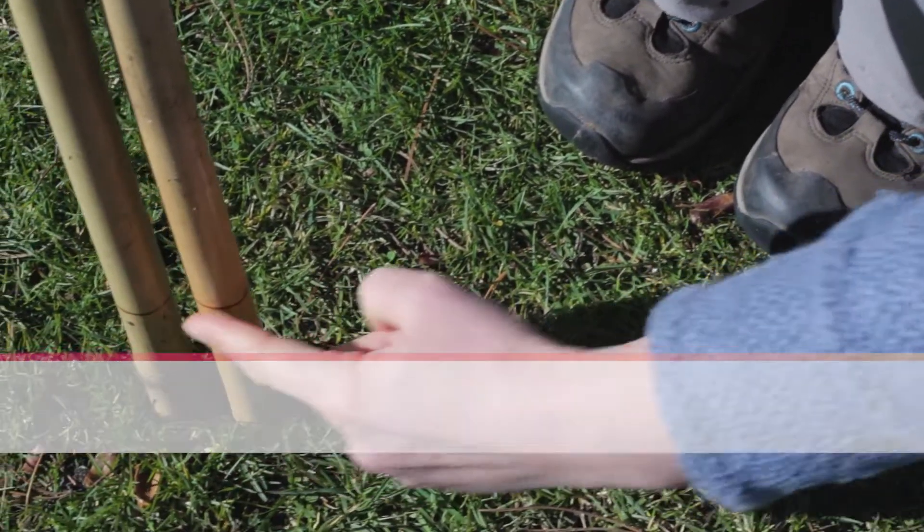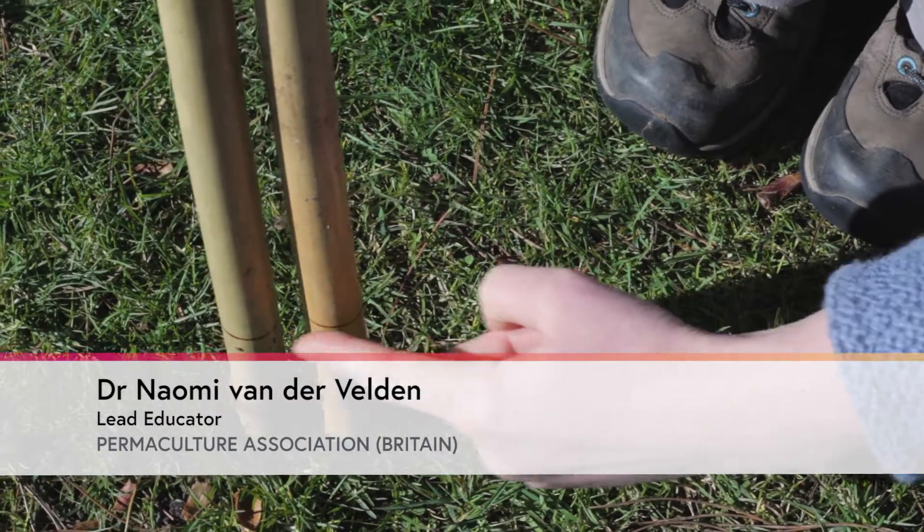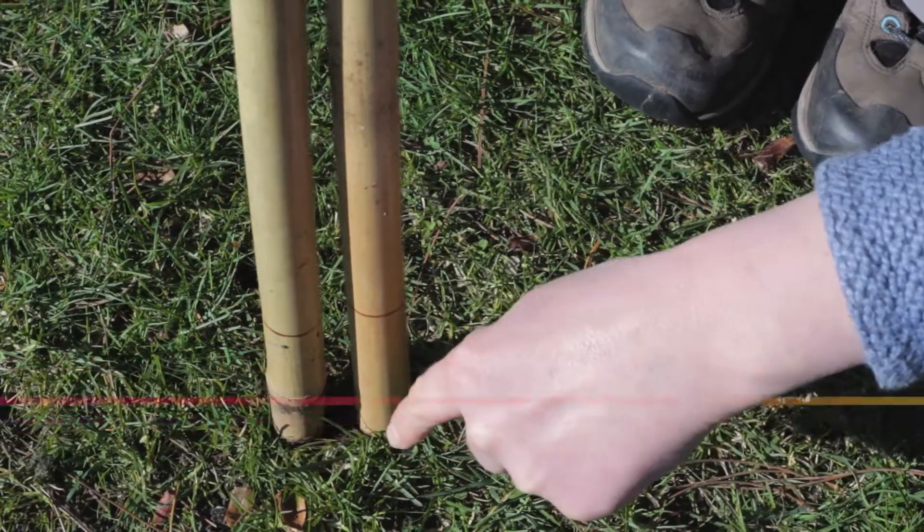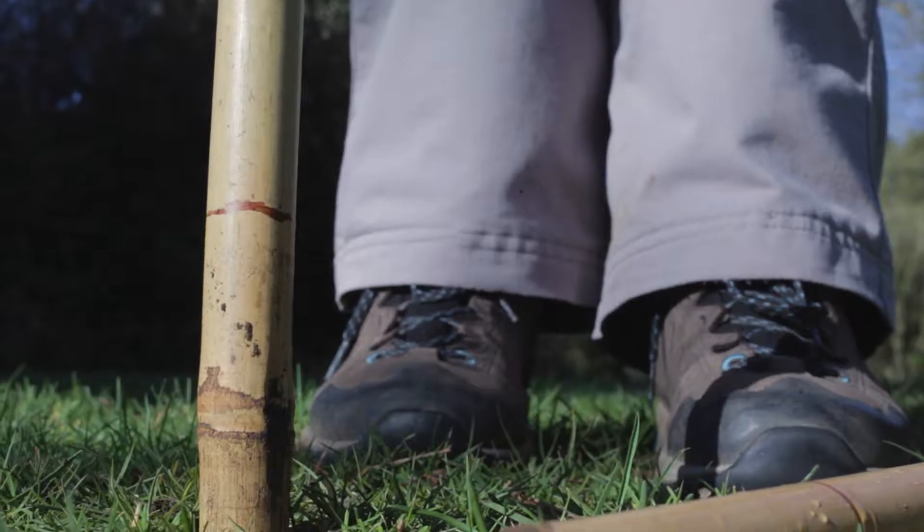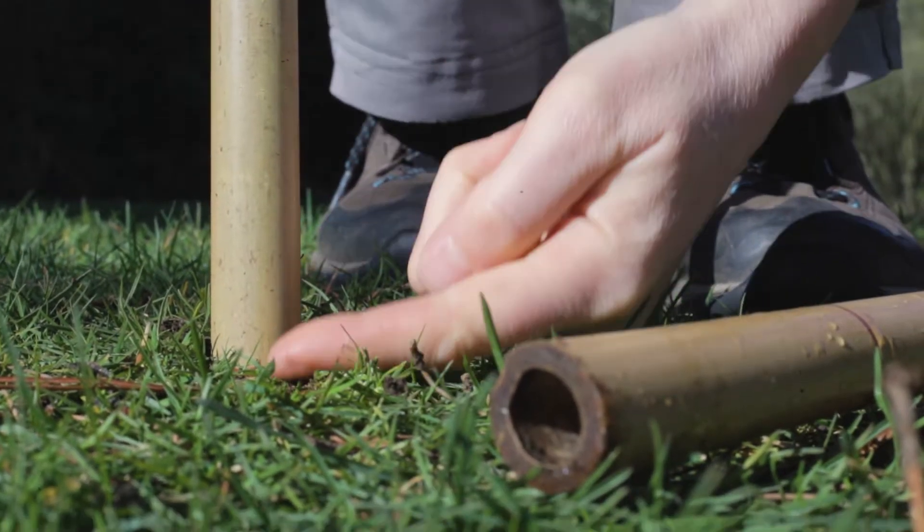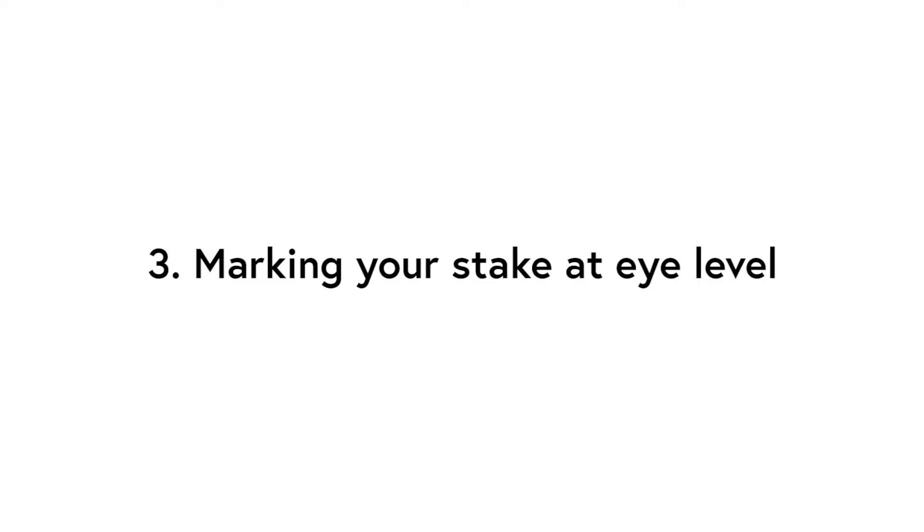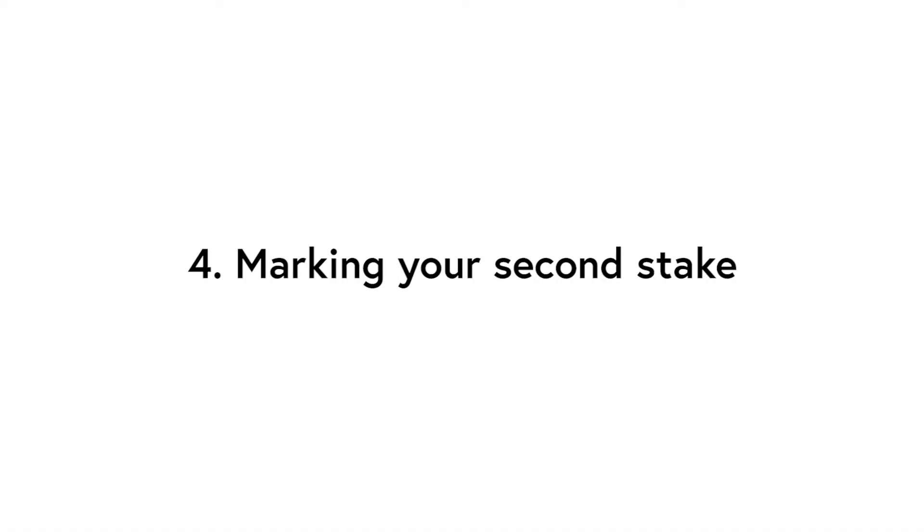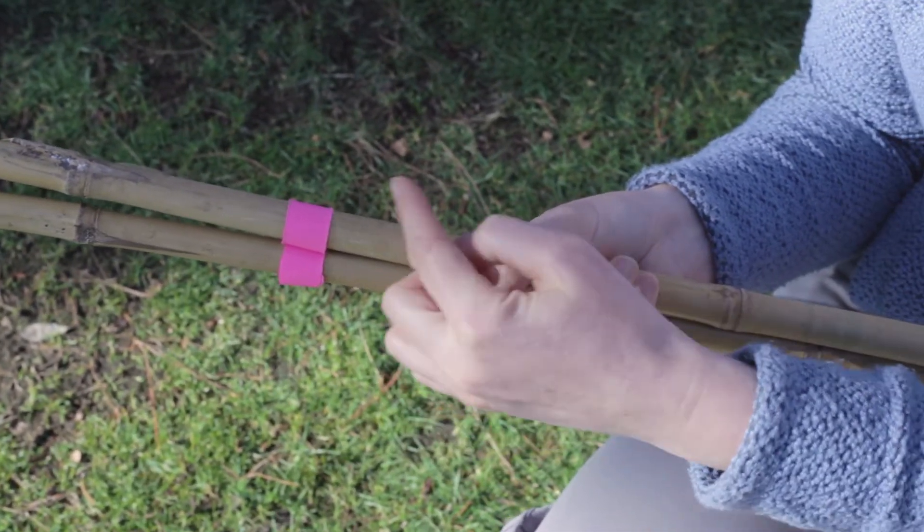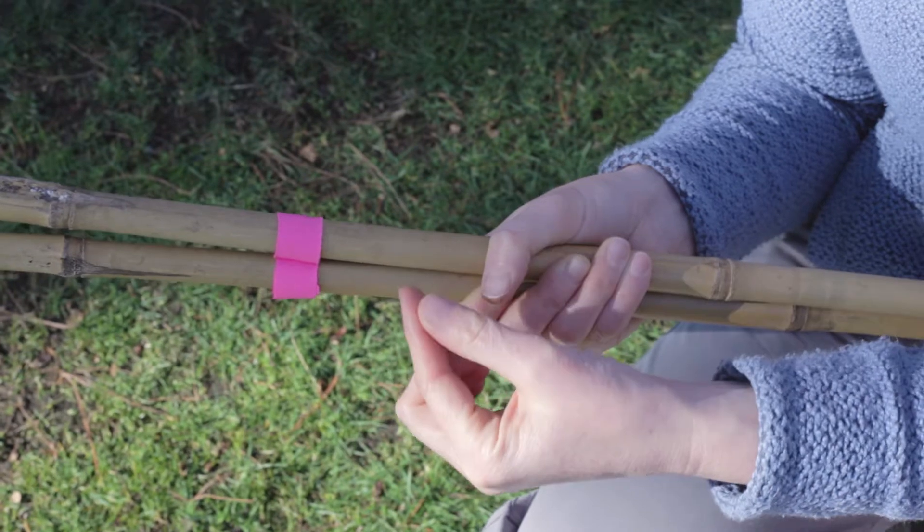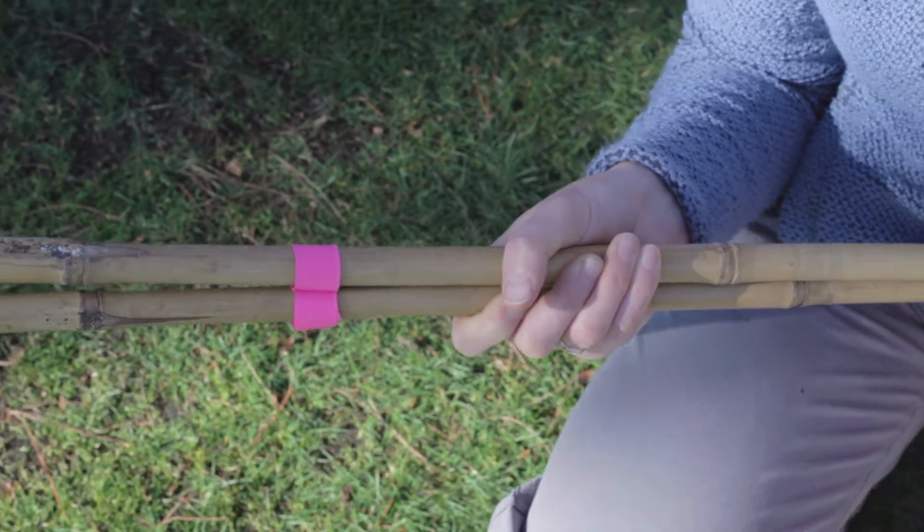We're going to mark both the stakes at the same height, and this represents the height to which we'll push them into the ground until this level lines up with the surface. We're going to line up so that the top of this mark is level with our eye level. We'll take them out of the ground and mark the second stake at the same height. We can mark using a pen or put around a piece of paper which may be clearer to see.